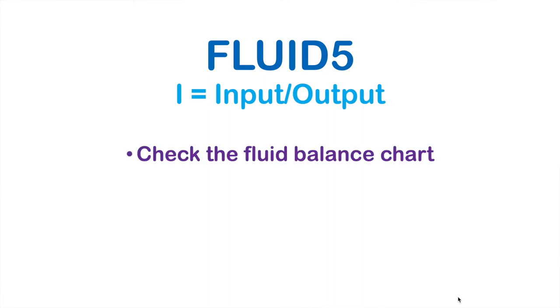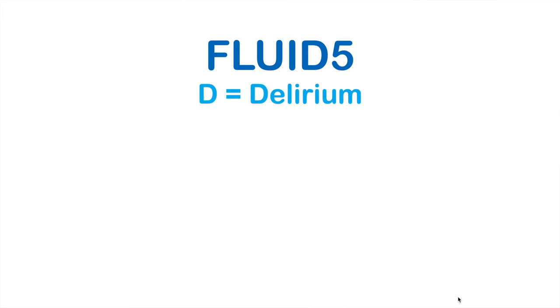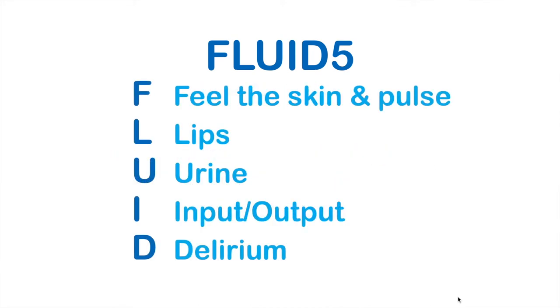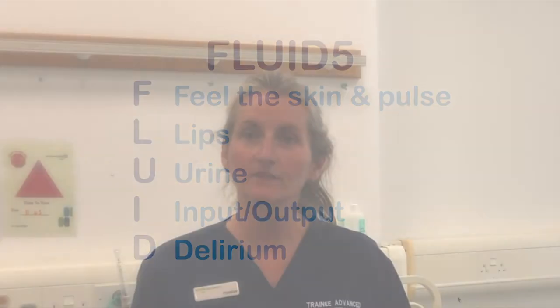I is for the input and output chart. You use this to make your assessment of the fluid balance. D is delirium. This can be the cause of dehydration and/or the symptom of dehydration. The 5 of Fluid 5 are the elements on the recording chart that are vital for meaningful information to be gained.